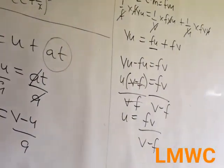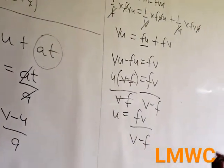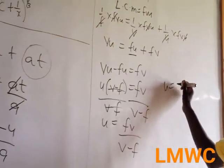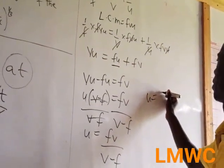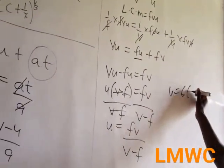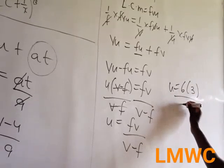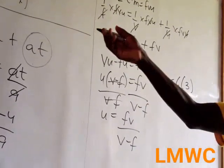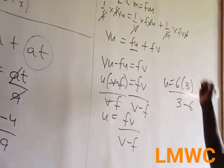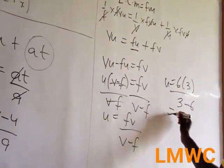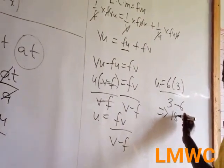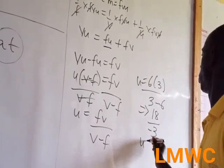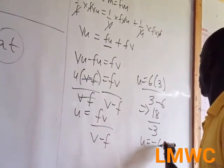But you have been asked to find u when f = 6 and v = 3. So what is f? f = 6 and v = 3. So we have 3 minus 6. Because v = 3 and f = 6, it is 6 times 3 = 18 over negative 3. So we have u = negative 6.